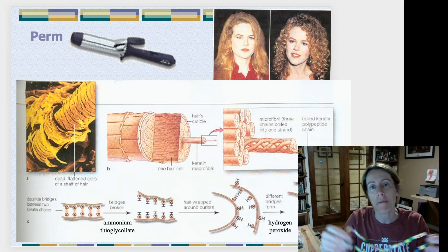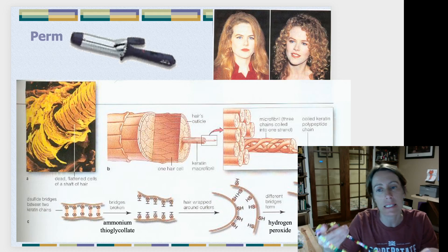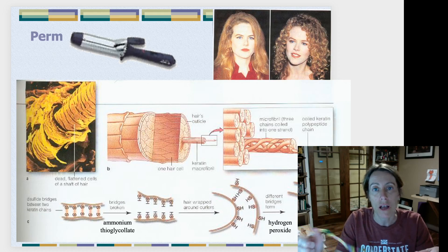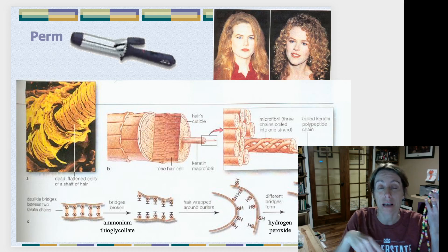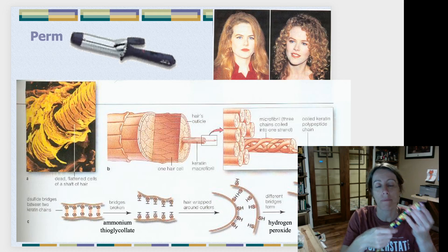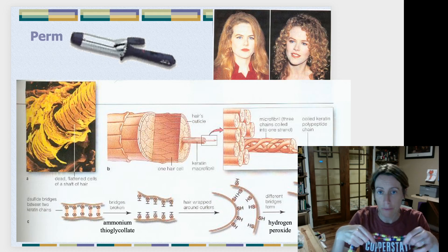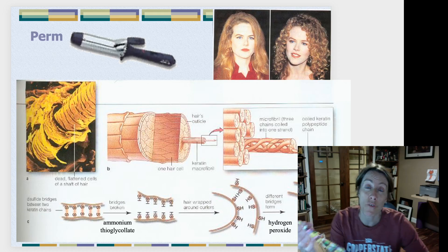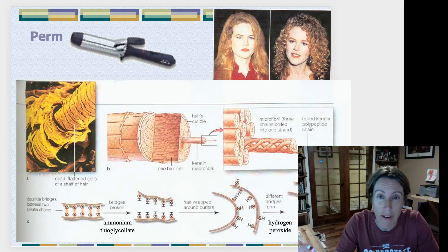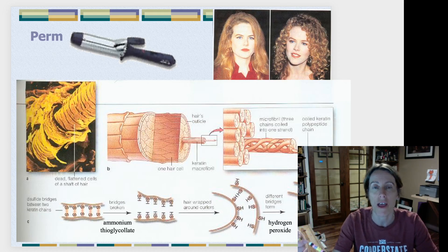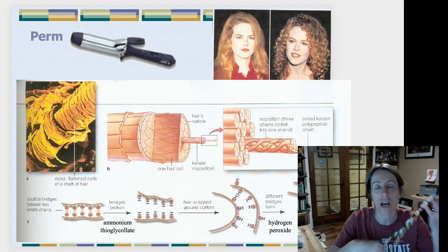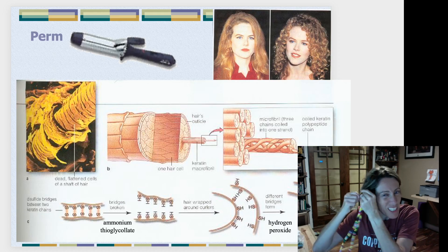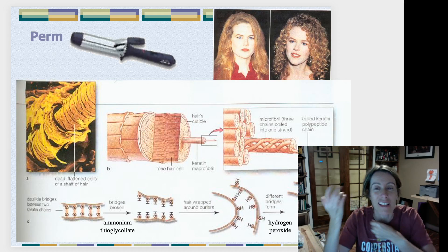Cysteines have a sulfhydryl R group, and that allows cysteines to make a disulfide bridge if they fold up next to each other. There are a lot of disulfide bridges in the tertiary and quaternary structure of hair, and that explains how hair is so tough.